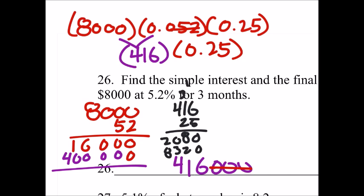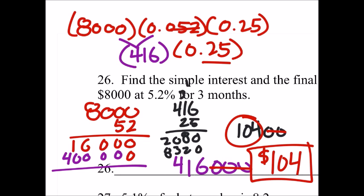So what is that? 10,400 with two decimal places from 0.25, and we get 104. So about 104 bucks right there.